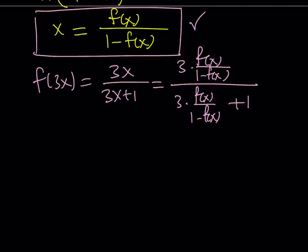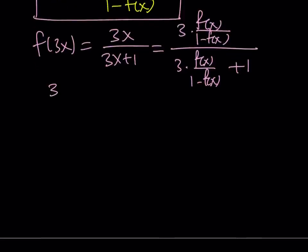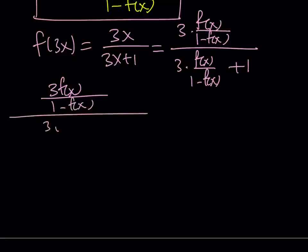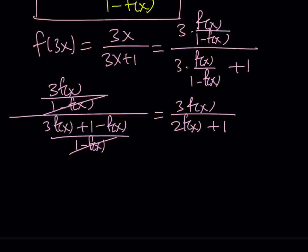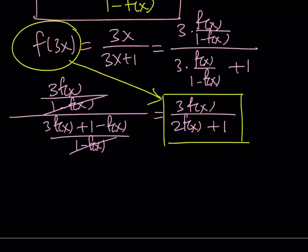We've got to make a common denominator at the bottom. The numerator gives us 3 f of x divided by 1 minus f of x, and the whole thing is divided by 3 f of x plus 1 times 1 minus f of x over 1 minus f of x. The denominators cancel out, and 3 f of x divided by — since 3 f of x minus f of x is 2 f of x plus 1 — gives us f of 3x equals 3 f of x divided by 2 f of x plus 1. This establishes a direct relationship between f of x and f of 3x.